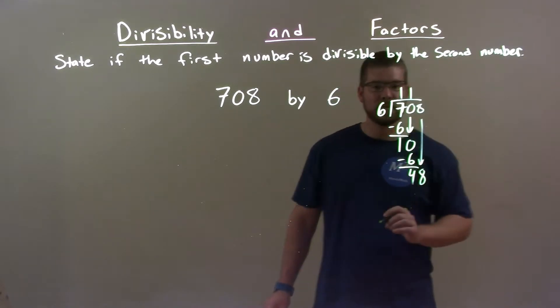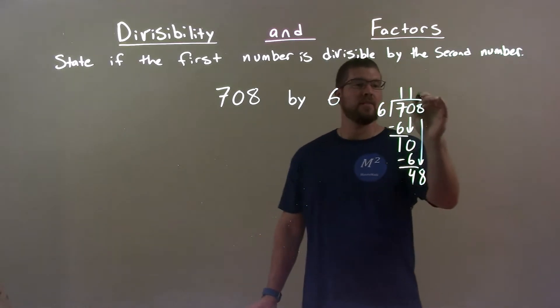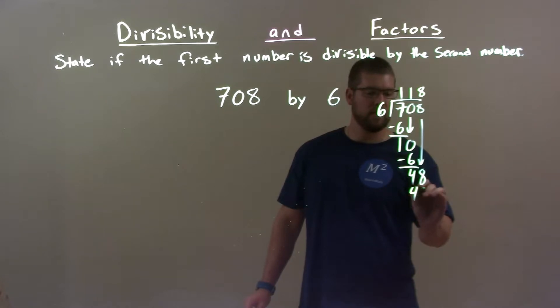Bring down the 8. Now does 6 go into 48 evenly? Yes, 8 times. 8 times 6 is 48. Subtract and we get 0.